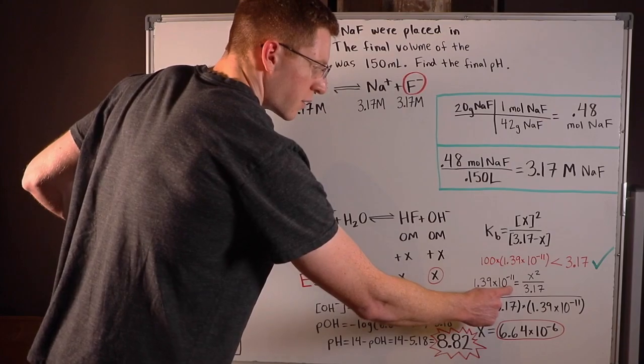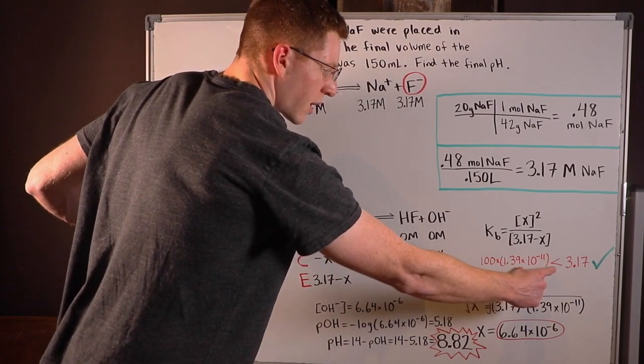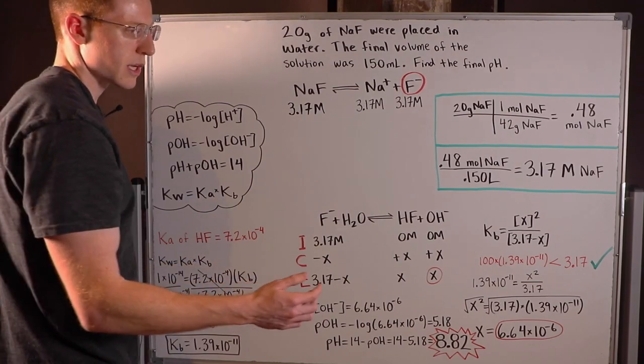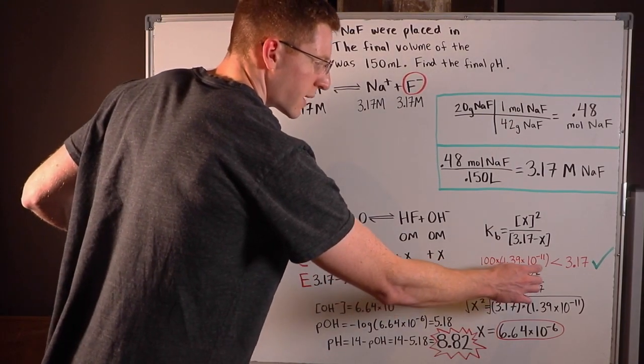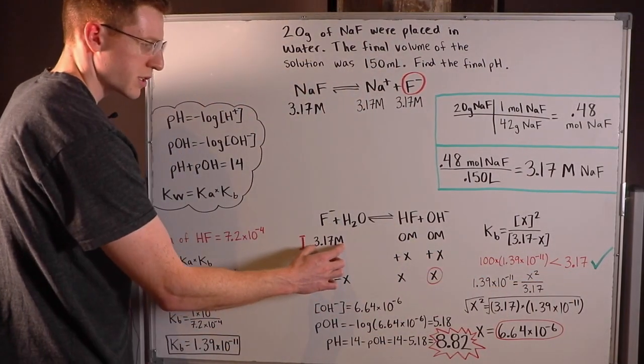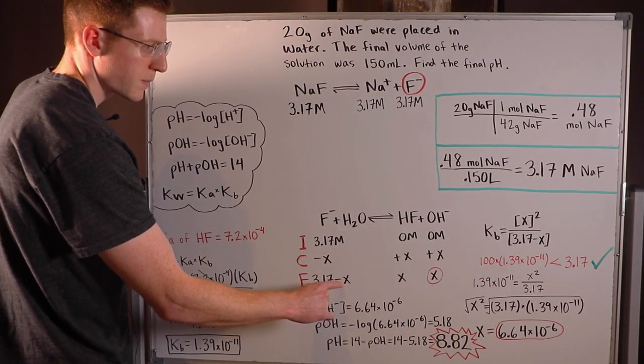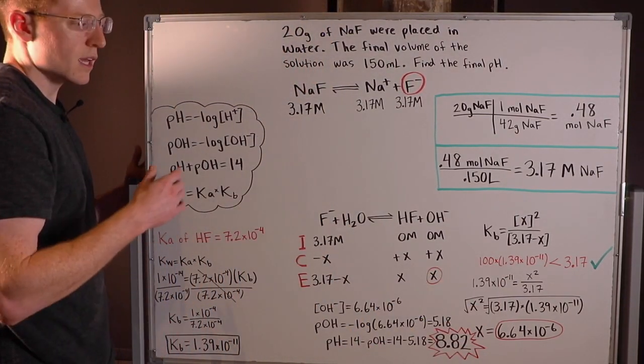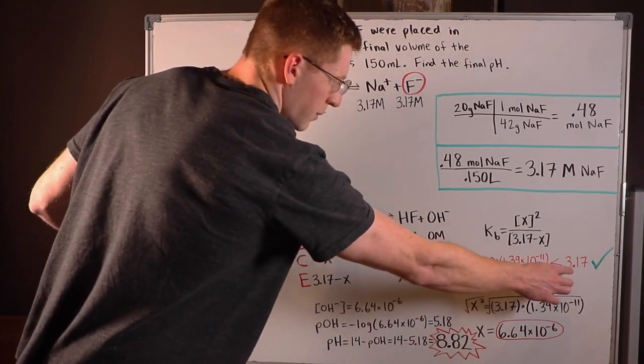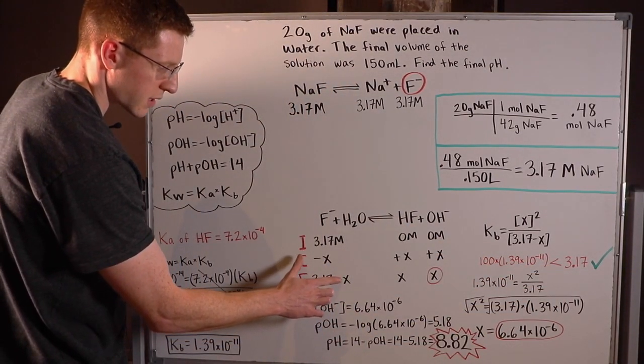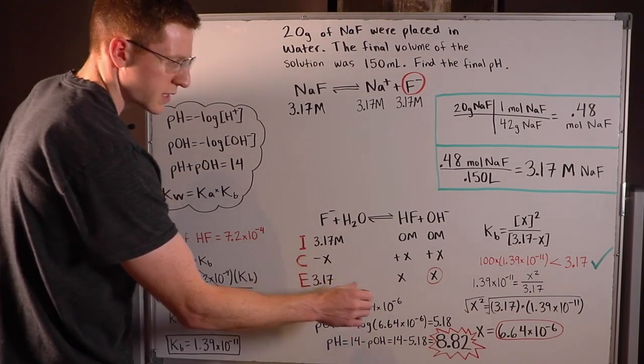So I went ahead and plugged that in for my Kb here. And you can see what I've done in red here is actually check the shortcut rule. The shortcut rule says that if 100 times my Kb is less than my initial reactant concentrations, I can forget about this -x here. And 100 times 1.39 × 10⁻¹¹ is certainly less than 3.17, so I can actually forget about this x here, and you can see that's what I've done down here.